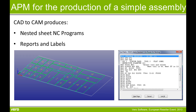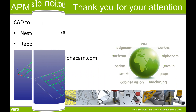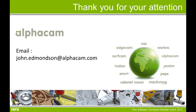Using constraints and machining styles within APM we're able to produce this simple assembly, and then combined with CAD to CAM to produce nested sheet entity programs for nested base manufacturing, including reports and labels. Thank you for your attention. This concludes the APM to CAD to CAM part one presentation.